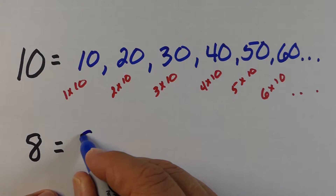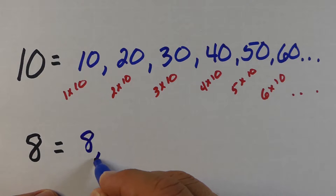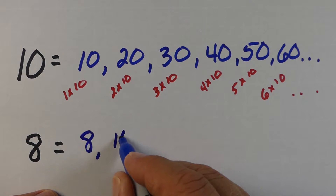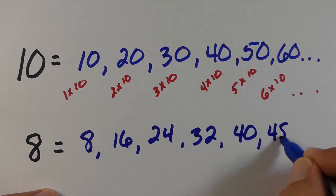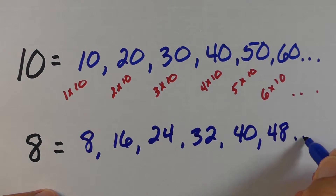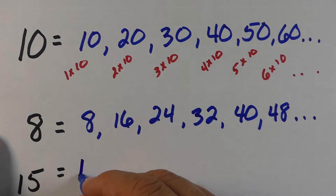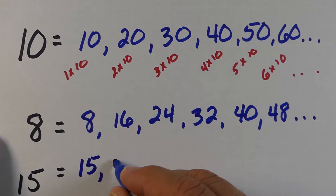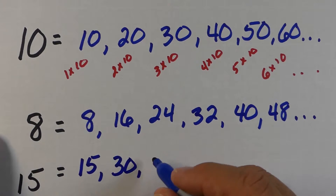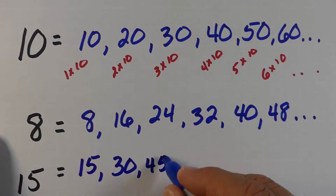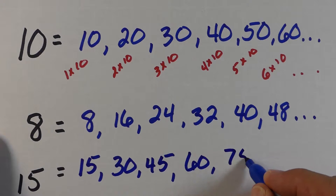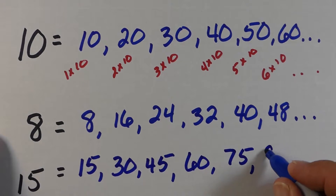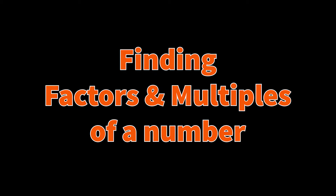Multiples of eight — we're basically going to count by eight, or eight times one, eight times two. So you can see eight, sixteen, twenty-four, thirty-two, forty, and forty-eight. And here are the multiples of fifteen — we're basically just taking fifteen and multiplying by one, by two, by three, and so on.